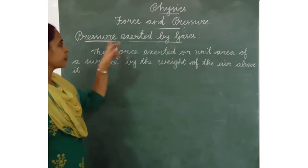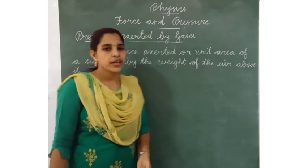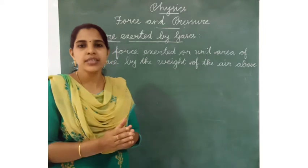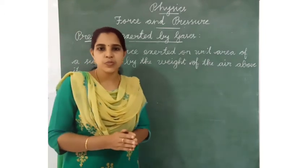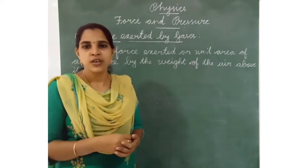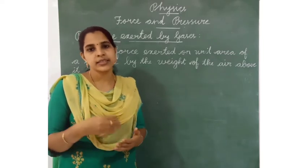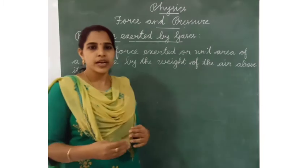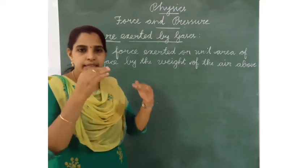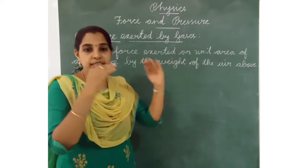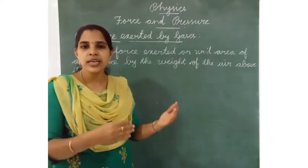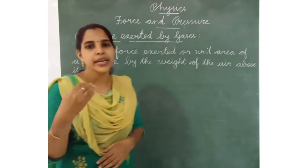Next topic is pressure exerted by gases. Do you know the atmosphere? One blanket of air surrounds our earth. That is called the atmosphere. There are five layers in the atmosphere. The gases present are hydrogen, nitrogen, oxygen, carbon dioxide, and water vapor. These are the composition of air in the atmosphere. The pressure exerted by the atmosphere on the earth is called atmospheric pressure.